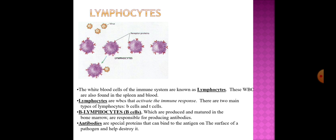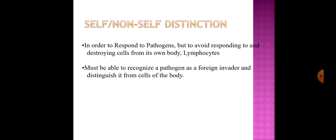There are two main types of lymphocytes: B cells and T cells. B lymphocytes, produced and matured in the bone marrow, are responsible for producing antibodies — special proteins that bind to antigens on the surface of a pathogen and help destroy it. In order to respond to pathogens but avoid destroying the body's own cells, a lymphocyte must be able to recognize a pathogen as a foreign invader and distinguish it from cells of the body.